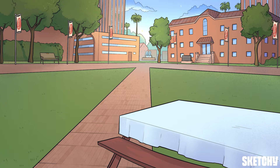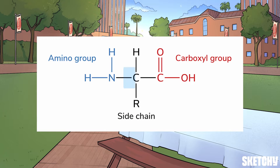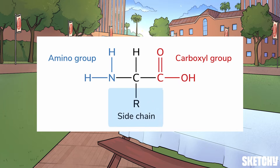But before we chomp into all the juicy details, let's have a quick refresher on the structure of alpha amino acids. These molecules consist of a central alpha carbon, which is almost always chiral. Glycine is the exception, but don't worry about that for now. The alpha carbon is bonded to a hydrogen, a carboxyl group, an amino group, and an R group.